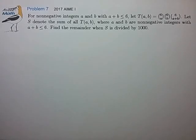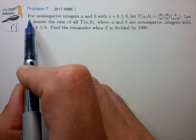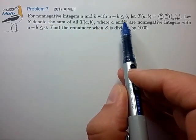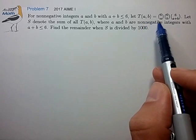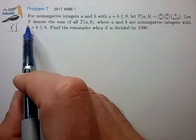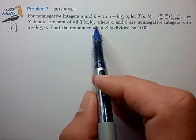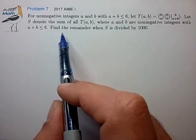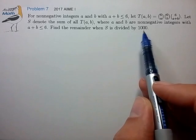Hi, this is problem 7 from the 2017 AIME 1. For non-negative integers a and b with a plus b less than or equal to 6, let's define T(a,b) to equal this product and let S denote the sum of all T(a,b) where a and b are non-negative integers whose sum is less than or equal to 6. Find the remainder when S is divided by 1,000.